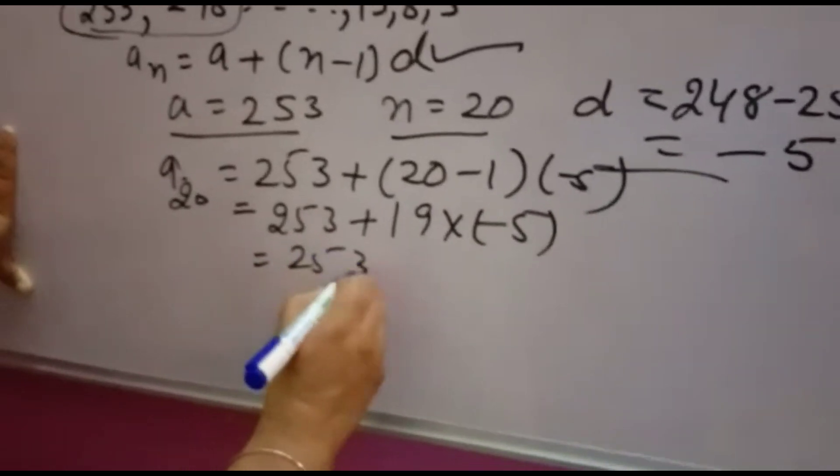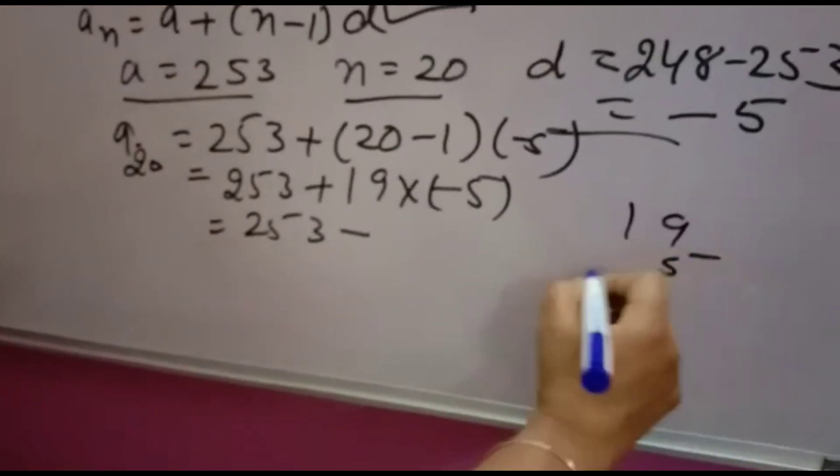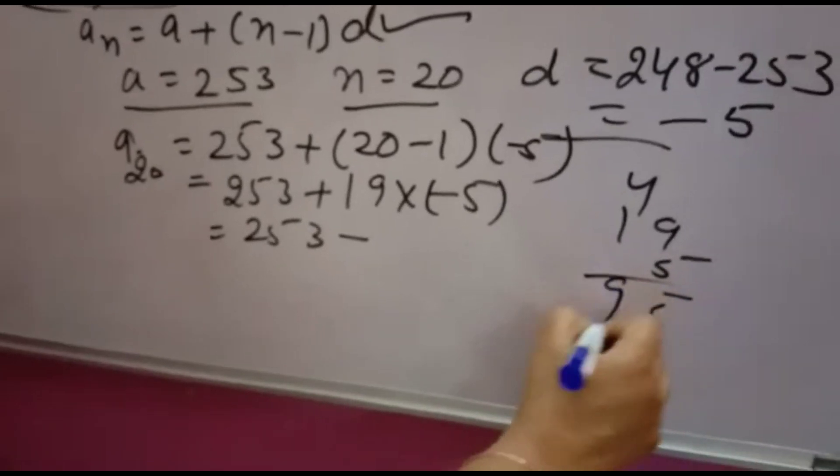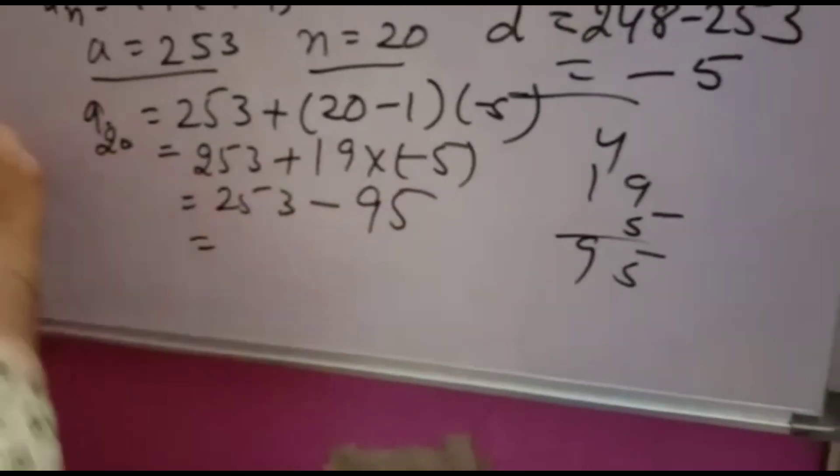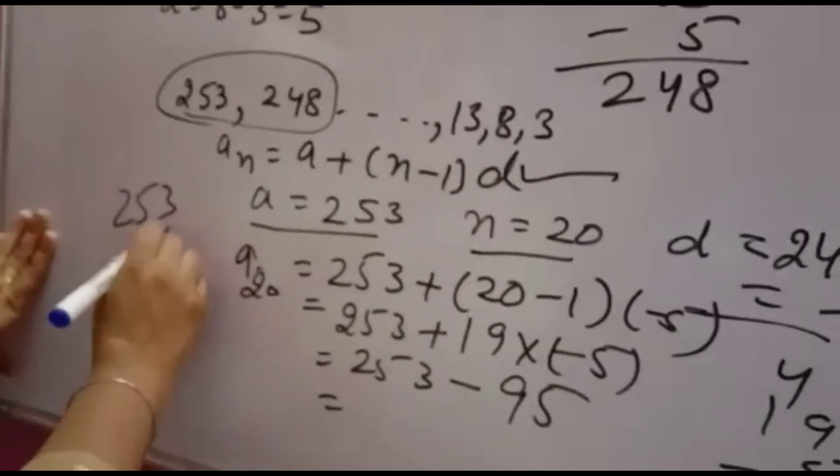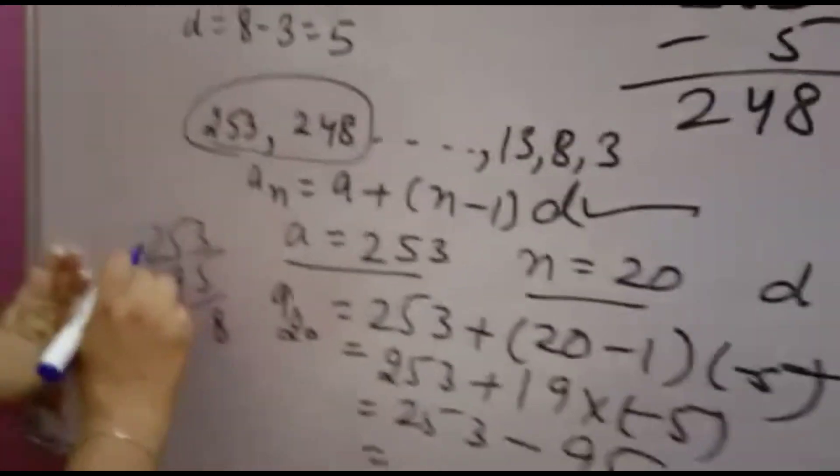So 253, 19 into 5. 9 times 5 is 45, so 95. Now 253 minus 95, what do you get?